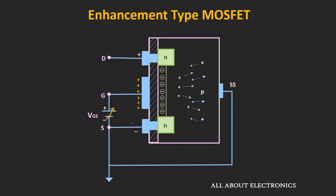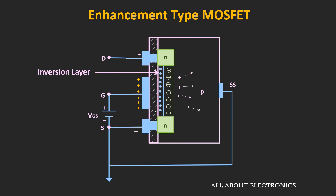As we keep increasing Vgs, the holes will be pushed more and more deeper into the substrate and the electrons will be able to overcome the recombination with these holes. They will rush towards the gate terminal, but due to the insulating oxide layer they cannot cross it and will start accumulating near the oxide layer. Eventually, an inversion layer of free electrons will be created near this oxide layer.